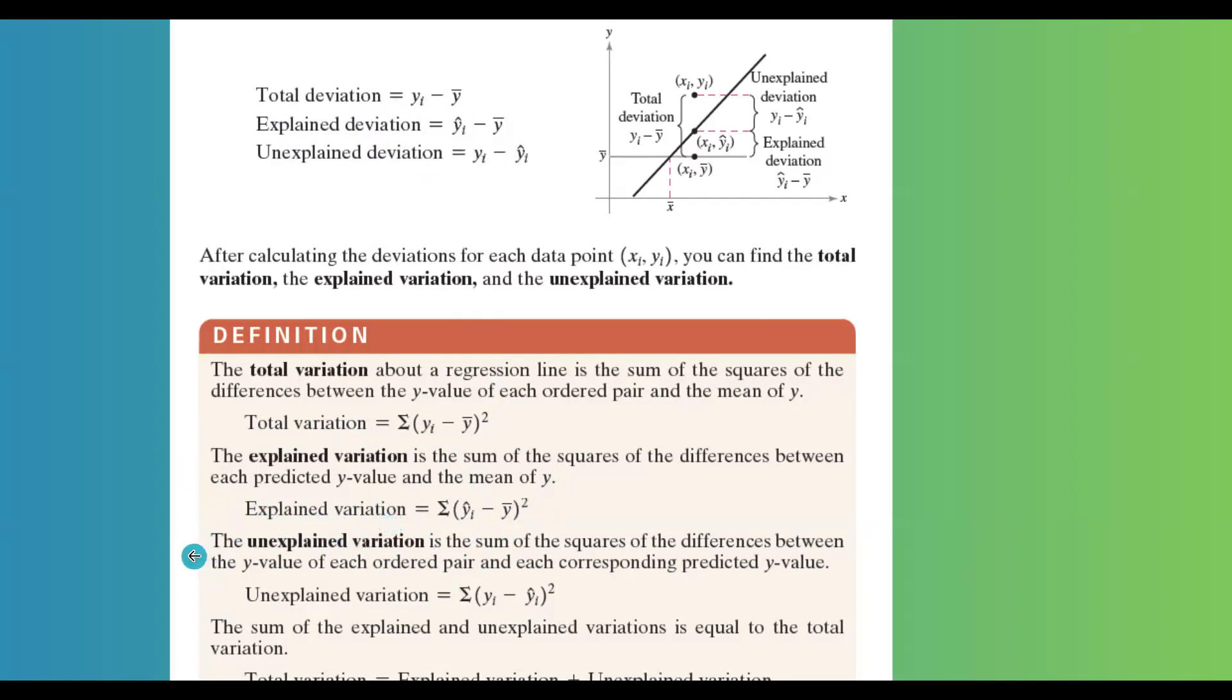And finally, you have unexplained variation, which is the sum of squares of the differences between the y value of each ordered pair and each corresponding predicted y value. Unexplained variation is the summation of yi minus yi hat to the second power. You have a nice visualization here. The sum of the explained and unexplained variations is equal to the total variation.